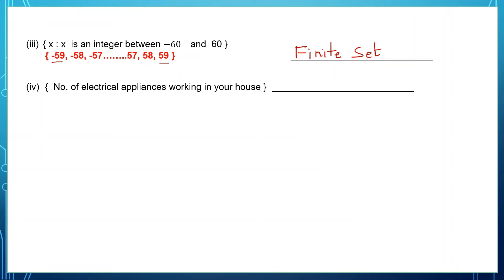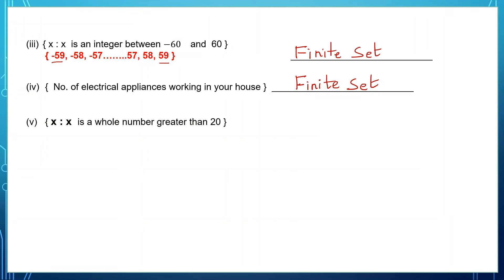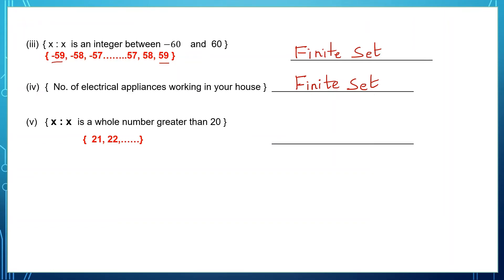Fourth one: number of electrical appliances working in your house — we can count the number of appliances, so this is a finite set. Question 5 is in set builder form: x is such that x is a whole number greater than 20. Numbers greater than 20 go on as 21, 22 and so on, so this is an infinite set because the number of elements is countless.